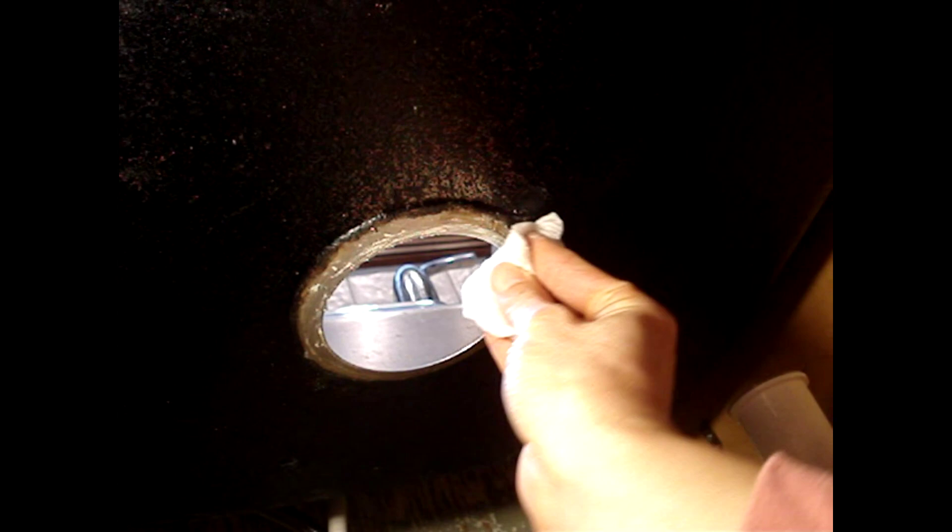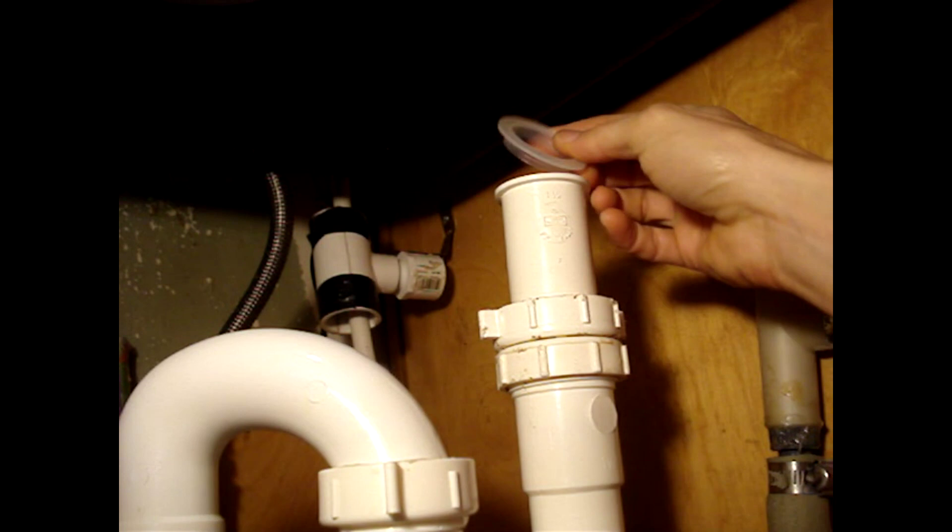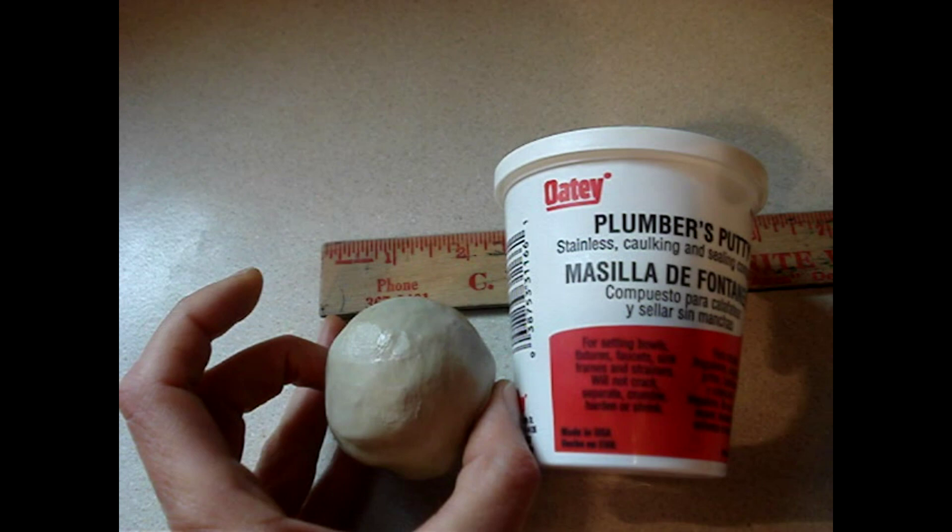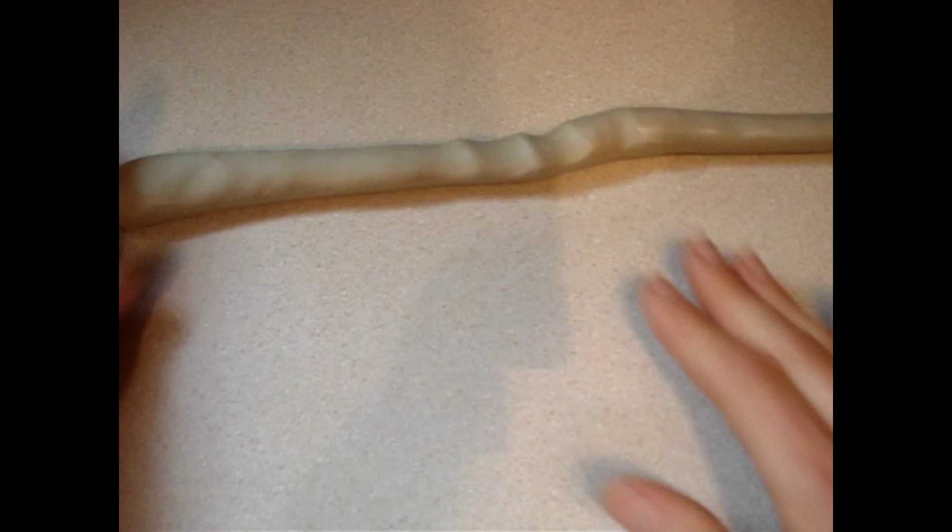I'll replace the tailpiece washer. Start with about a two-inch ball of plumber's putty. Roll it into a rope.